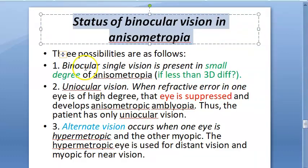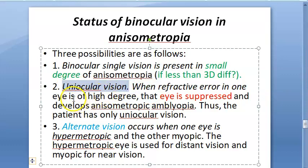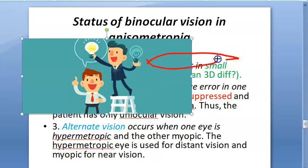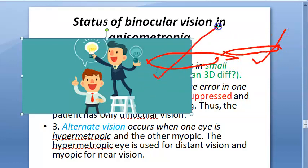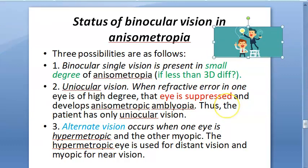Regarding binocular vision: if the difference is less than 3 diopters, people can have binocular single vision — they can get a single image from both eyes. But at a younger age, the brain starts suppressing the image from one eye, leading to uniocular vision — only one eye is used for seeing. After a certain age, you cannot correct the brain's visual pathway for the other eye. Alternatively, alternate vision can develop — if one eye is hypermetropic and the other myopic, the person uses the myopic eye for near vision and the hypermetropic eye for distance.